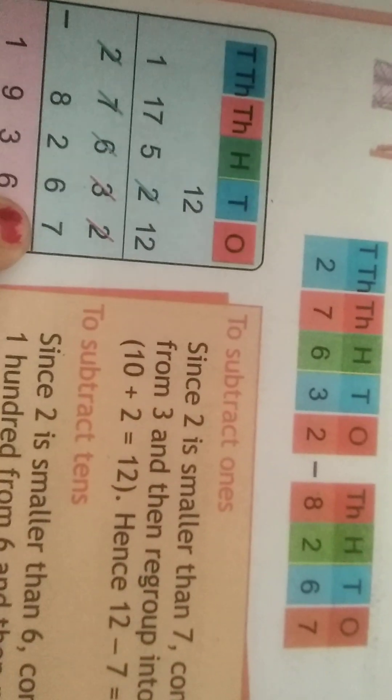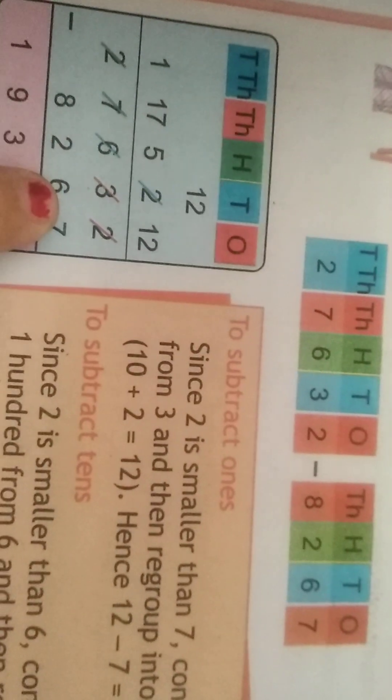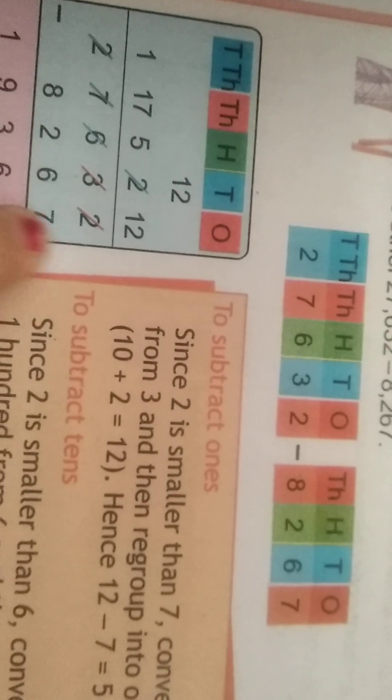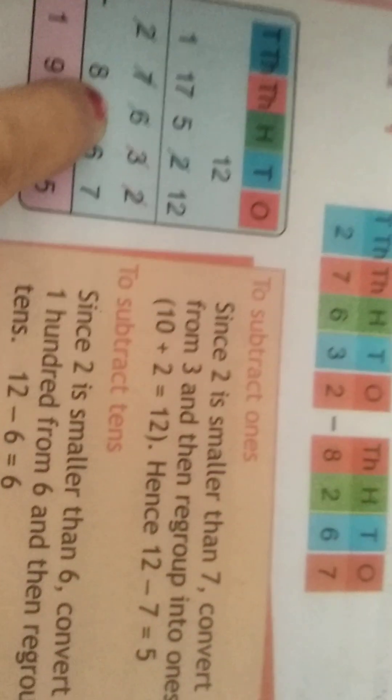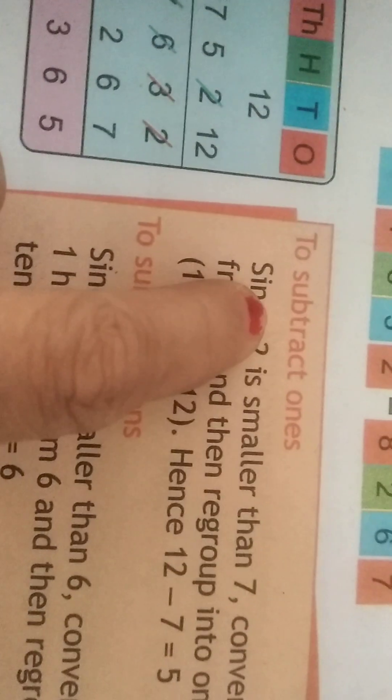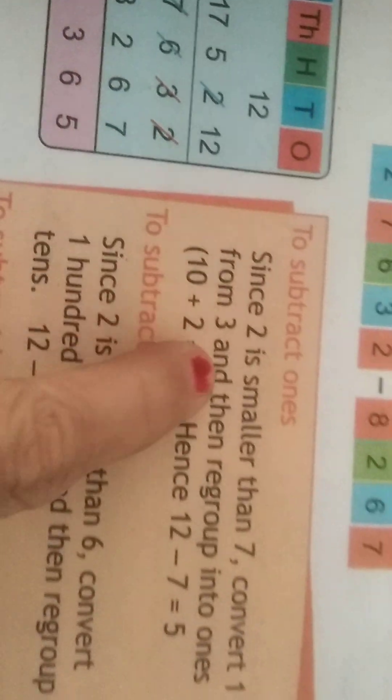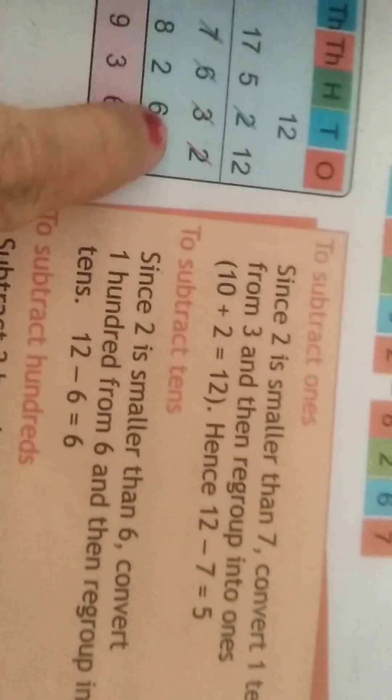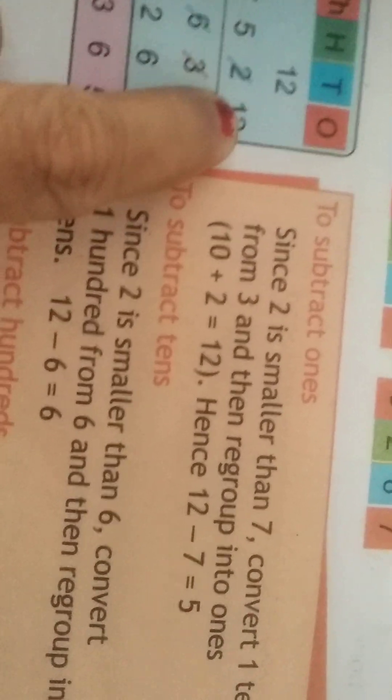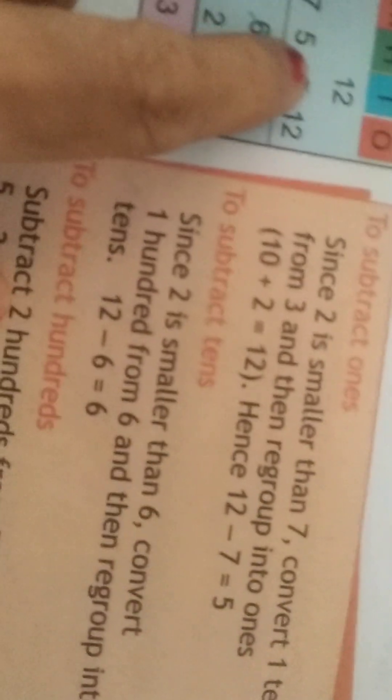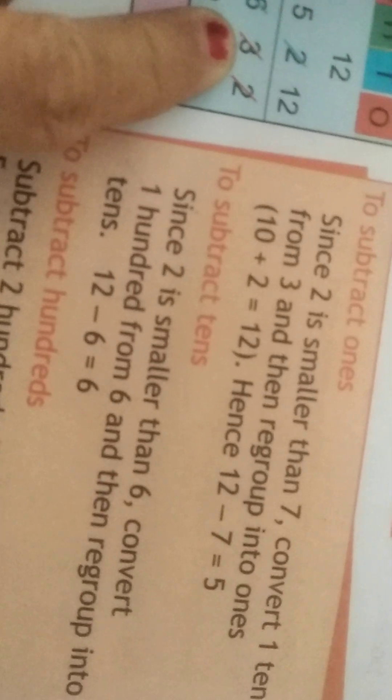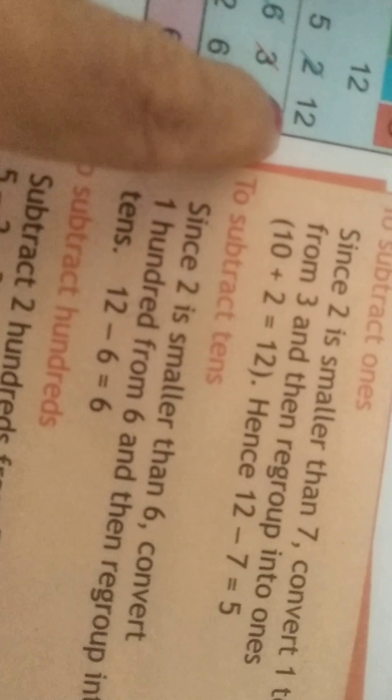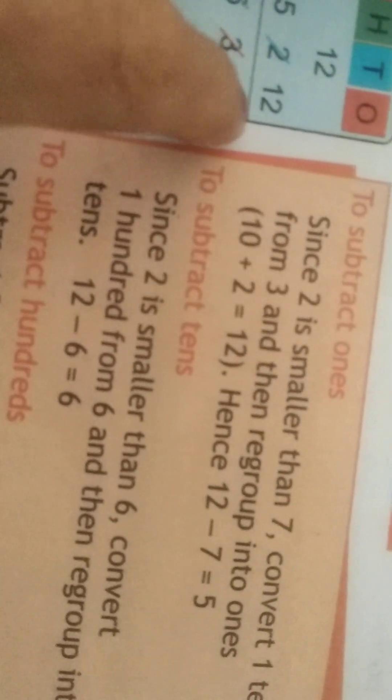So 7 ones, 2 hundreds, 8 thousands - 8267. Write like this. To subtract ones, since here 2 is smaller than 7, convert 1 ten from 3 and then regroup into ones. So here 12 will come.